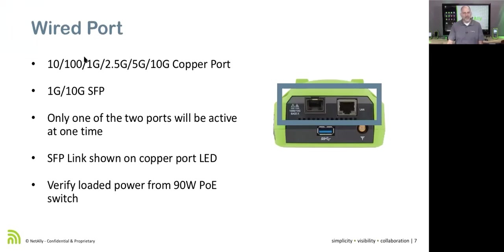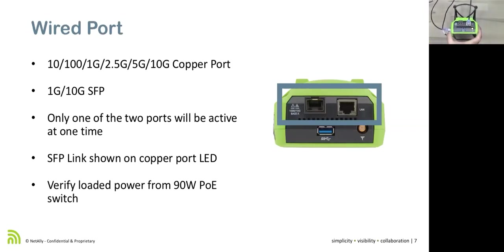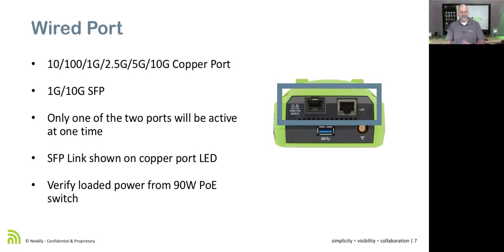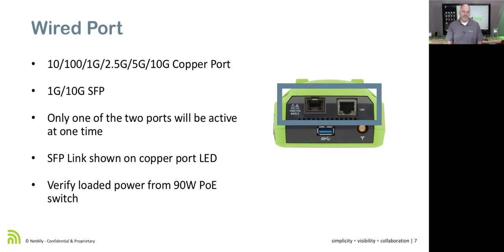Up on the top of the unit, we've got two ports treated as one wired port — only one can be active at a time. The copper port supports 10, 100, 1000, 2.5 gig, 5 gig, and 10 gig. For multi-gig environments where Cat 5 or Cat 5e can't run full 10 gig, you can run 2.5 or 5 gig. We also have a 1 gig/10 gig SFP slot.